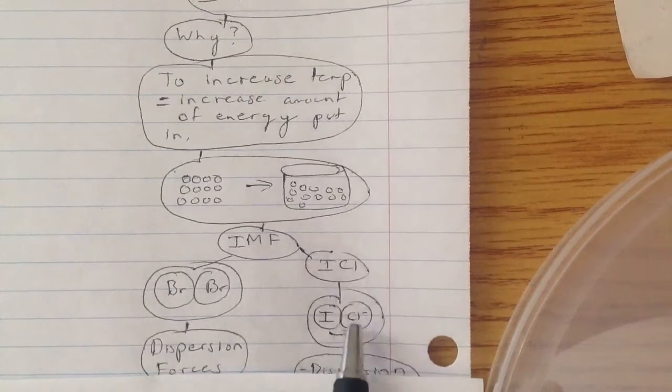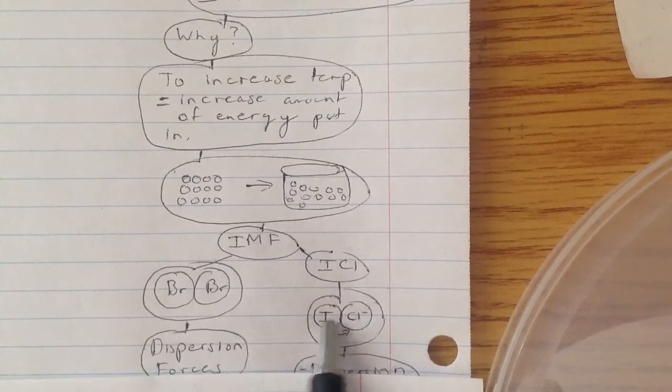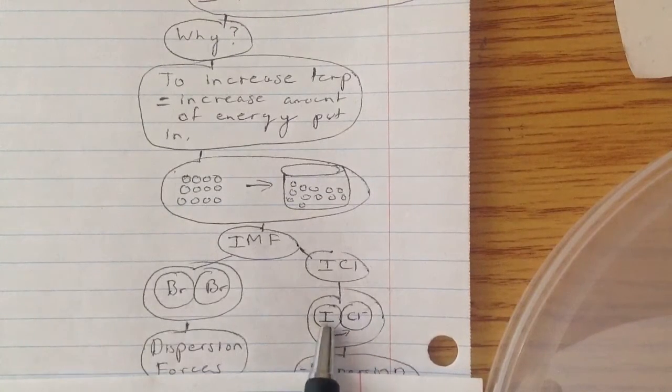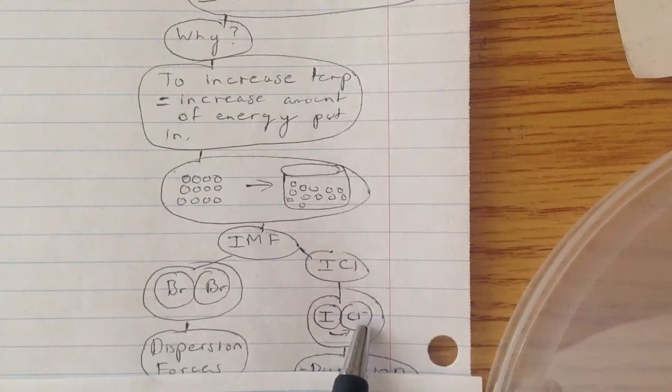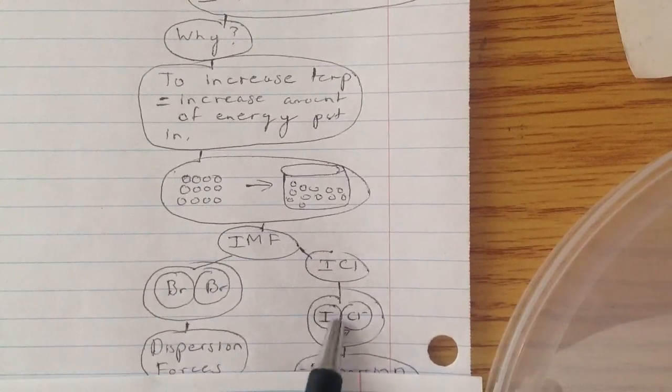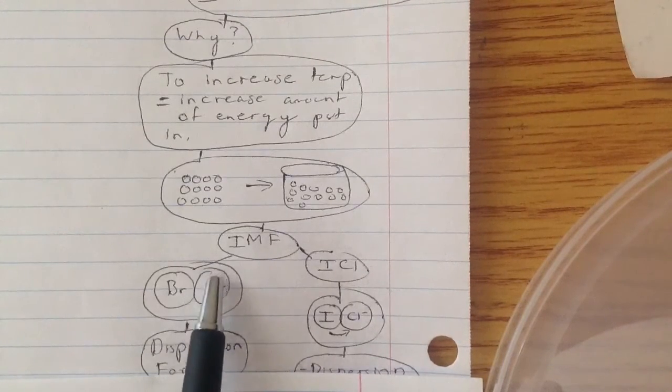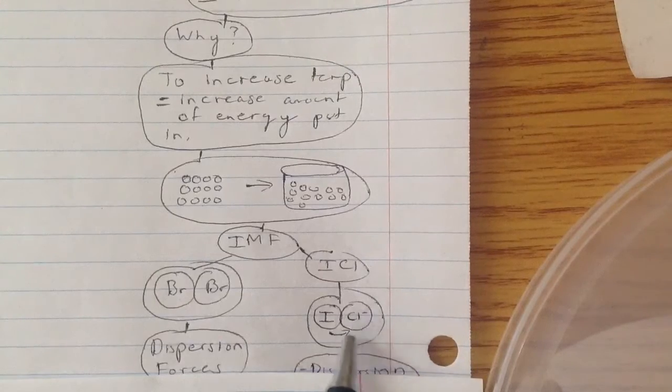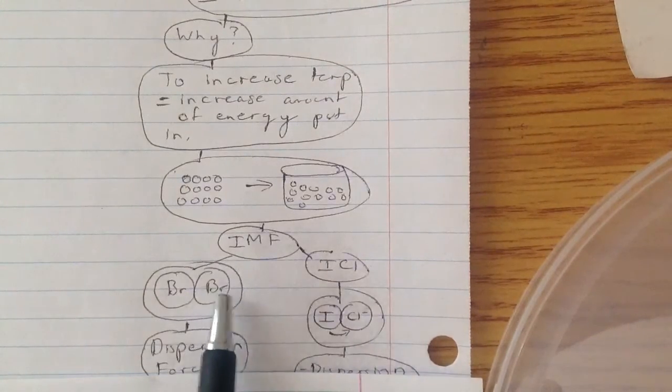Over here, you have ICl. Cl is actually more electronegative than I. So that means iodine's electrons are going to be pulled in by chlorine. If the electrons are pulled in more, because in Br2 it happens randomly. But here, chlorine's actually stronger, so it's going to pull these electrons more than Br2.